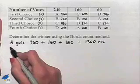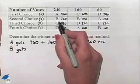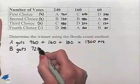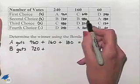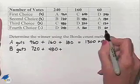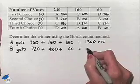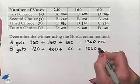Let's go to candidate B. First column will give B 720 points. Next column, 480 points, and last column, 60 points. That gives us a total of 1,260 points.